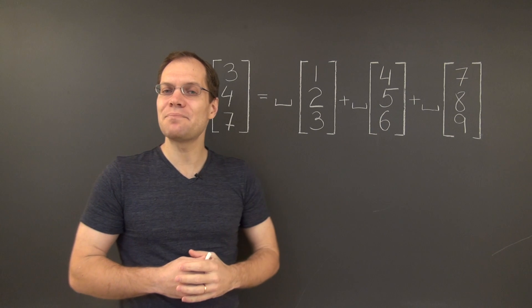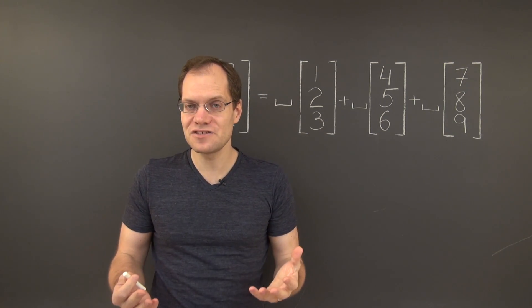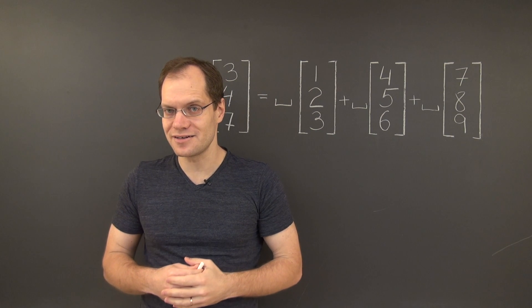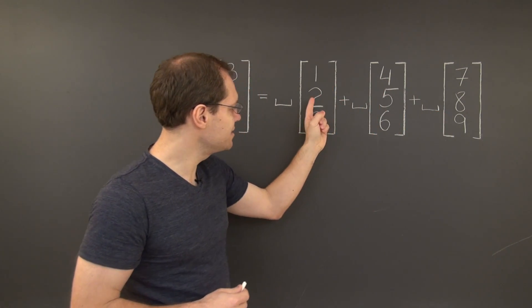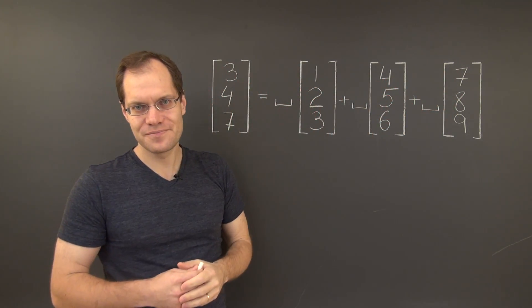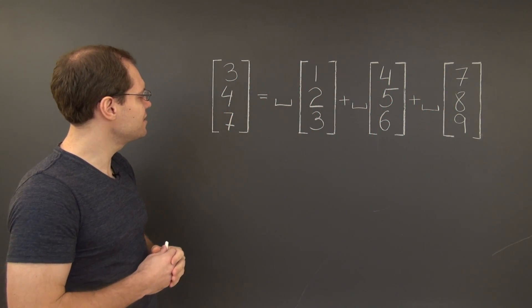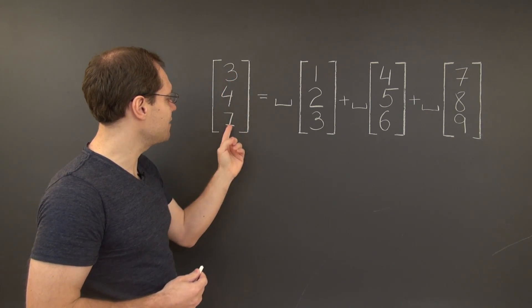And while it is true that this decomposition problem does not have a solution, the right justification for it is the one that was given earlier, that all the decomposition vectors share the property that the middle entry is the average of the other two, while the vector on the left-hand side does not have that property because 4 is not the average of 3 and 7.